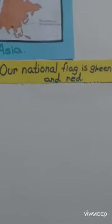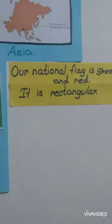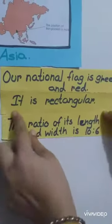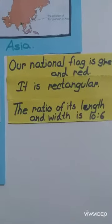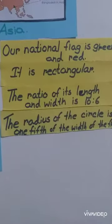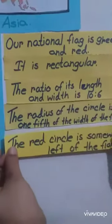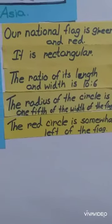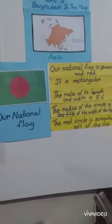Our national flag is green and red. It is rectangular. The ratio of its length and width is 10 to 6. The radius of the circle is one-fifth of the width of the flag. The red circle is somewhat to the left of the center of the flag.